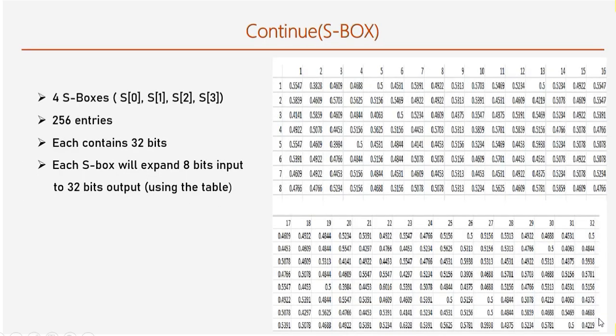As we know, we have to use 4 S-boxes labeled as S0 to S3. Each S-box contains 256 entries of 32 bits as shown in the figure. Each S-box of Blowfish will expand the 8-bit input into 32-bit output.